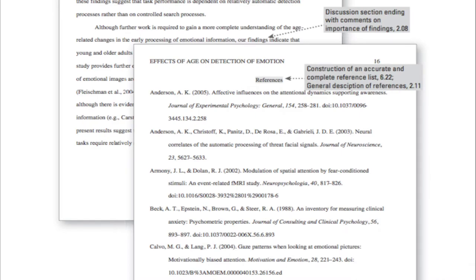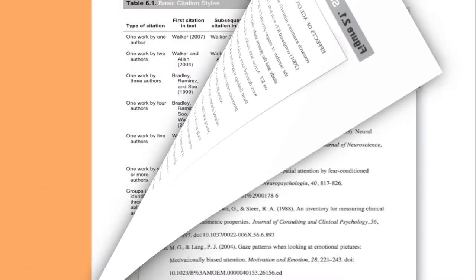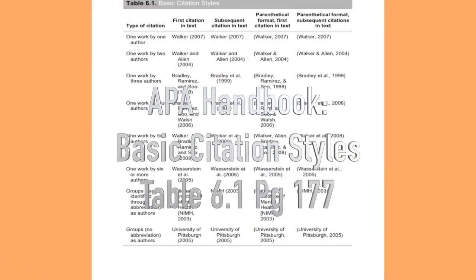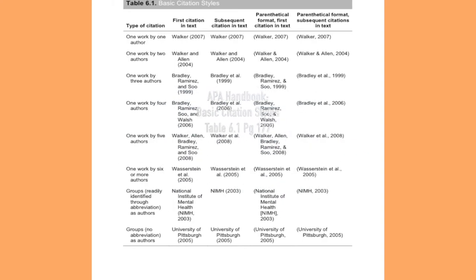Half the job is creating a reference page at the end of your research paper. The other half is properly using in-text citations. This basic citation styles chart, located on page 177 in your APA handbook, shows you how to quickly format your in-text citations.